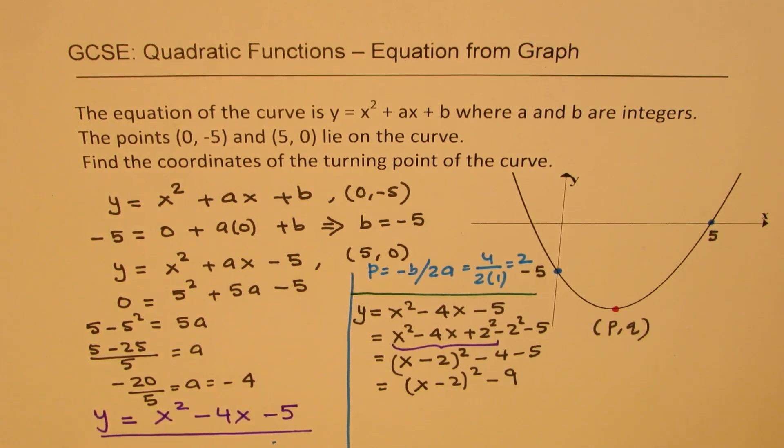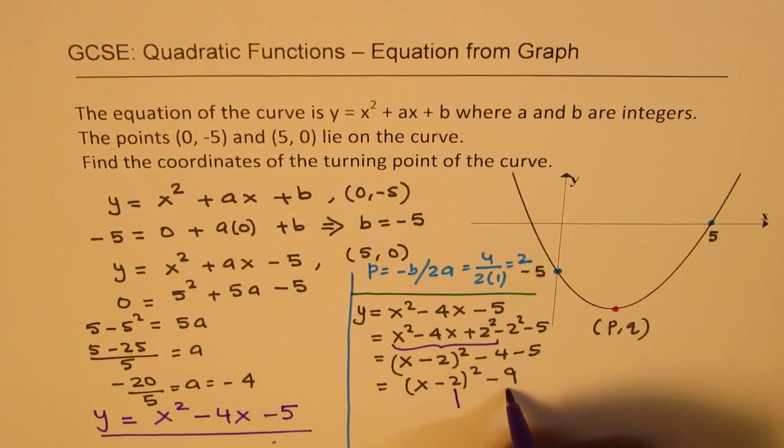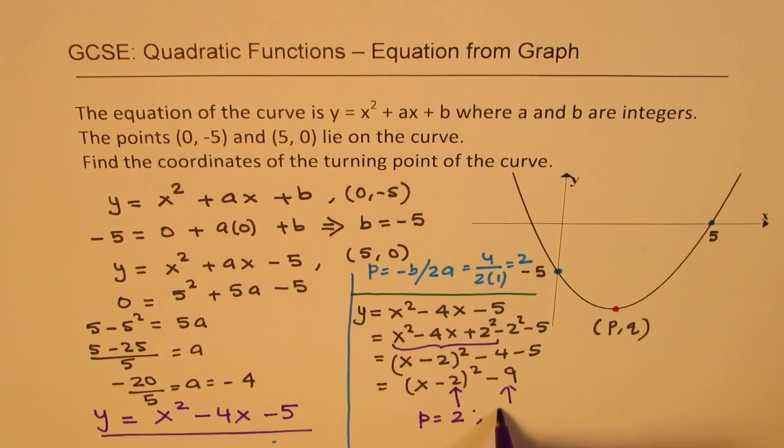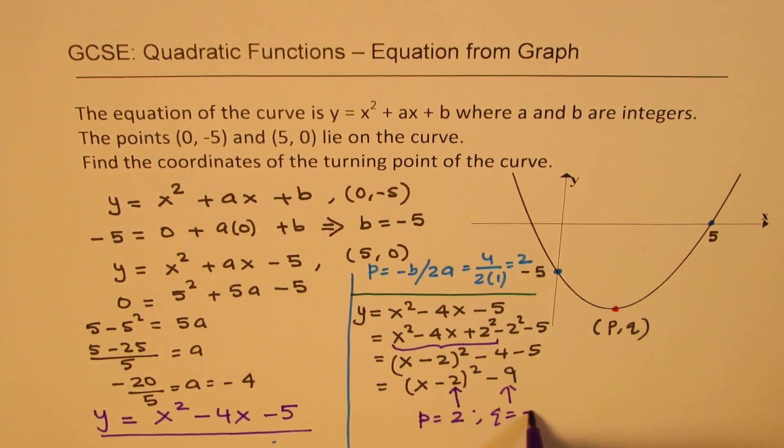So that gives you the value of p and q. These two values give you the value of p and q. So we have p: whatever makes this 0, which is 2, and the value of q will be -9.